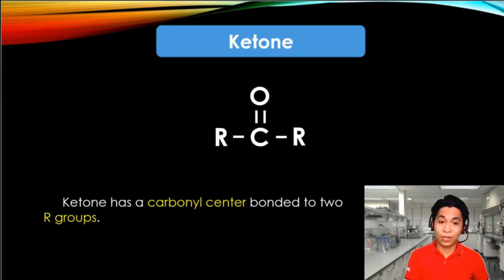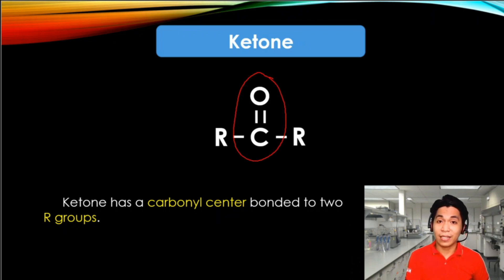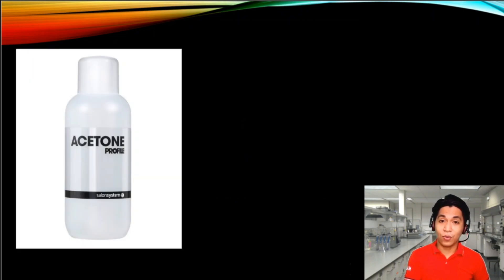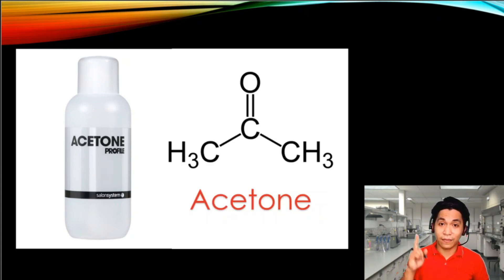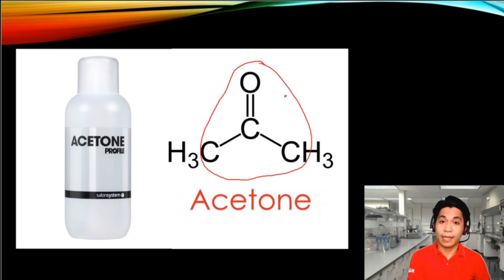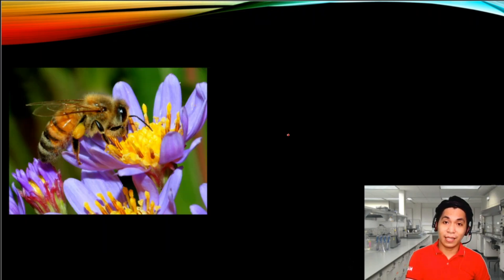Ketone, on the other hand, is a functional group with a carbonyl group sandwiched between two carbon atoms. The one encircled is the carbonyl group sandwiched to two carbon atoms. An example of a molecule with a ketone is acetone. Notice the suffix: '-one' in ketone, '-one' in acetone. The structure of acetone is given there, and the ketone is located here — a C double-bonded O sandwiched between two carbon atoms. Another example is a substance produced by bees to attract another bee, known as a pheromone, which also ends in '-one' because it contains a ketone.